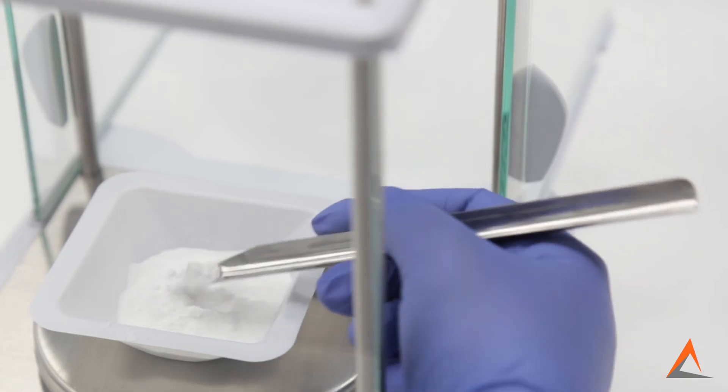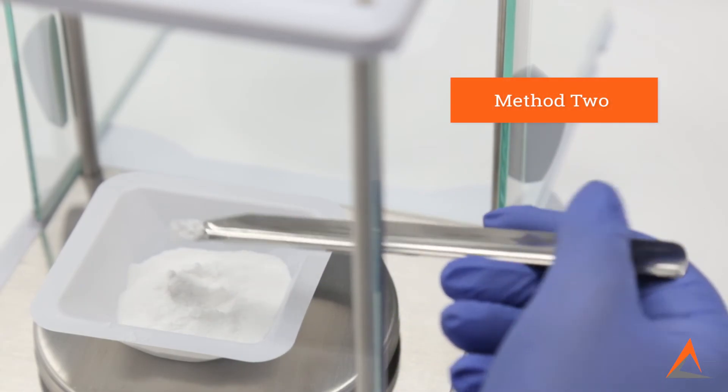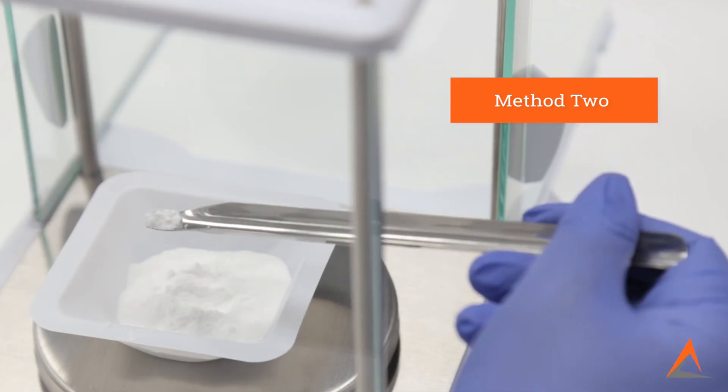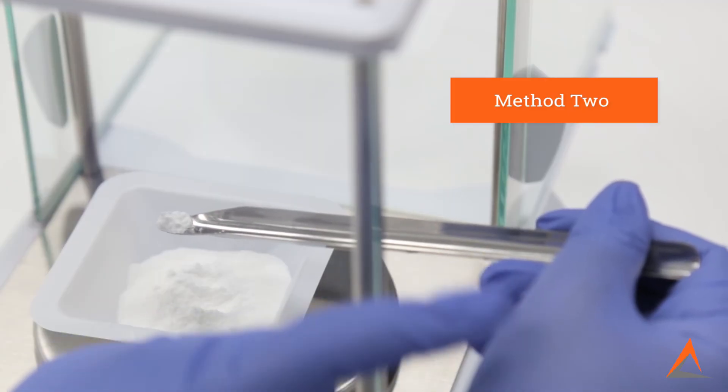Lastly, if you feel more comfortable holding the spatula at the far end, you can use your second hand to lightly tap the hand holding the spatula. Once again, this allows for more controlled movement so that you can slowly add powder into your weigh boat.